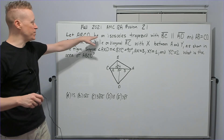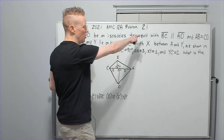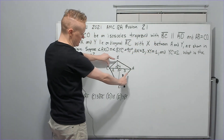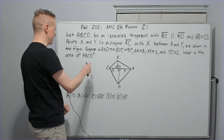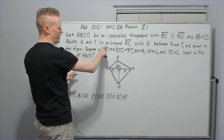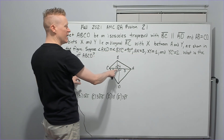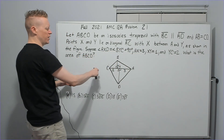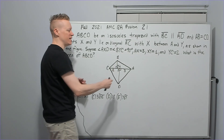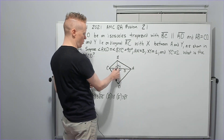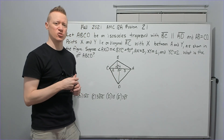Let ABCD be an isosceles trapezoid — that means two sides are equal, not the bases; the bases are parallel — with BC parallel to AD, and AB equals CD because it's isosceles. Points X and Y lie on diagonal AC with X between A and Y, as shown in the figure. Suppose angle AXD equals angle BYC equals 90 degrees, and the lengths are 3, 1, and 2. What is the area of ABCD, the isosceles trapezoid?